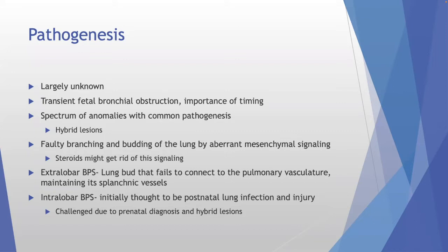Extralobar bronchopulmonary sequestration occurs when the lung bud fails to connect to the pulmonary vasculature but maintains splanchnic vessels — blood supply comes off the aorta, sometimes through the diaphragm, which can be scary if you lose control of it. Intralobar BPS was previously thought due to postnatal lung infection, but with prenatal diagnoses now more common, that theory has been largely debunked. CPAM specimens show arrest of the pseudoglandular-canalicular phase, which is where steroids help by pushing development forward.